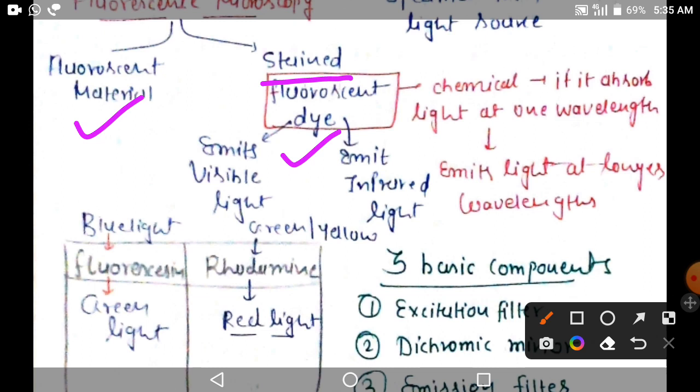The dye emits light, which will be visible light or infrared light. If it is infrared light, then we can't see with our visible eyes. We will see through a photographic plate or high absorbance plate.